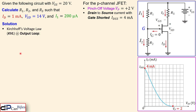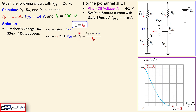Let's set up Kirchhoff's Voltage Law at the output loop. Starting from the supply, VSS equals the voltage across RS plus VSD. We know VSS = 20 V, VSD = 14 V, and IS = ID = 1 mA. Solving for RS: RS = (20 − 14) / 1 mA = 6 kΩ. That gives us our first unknown.